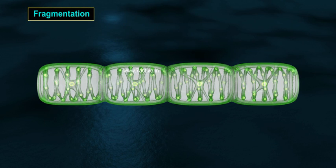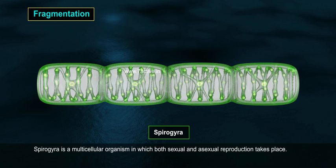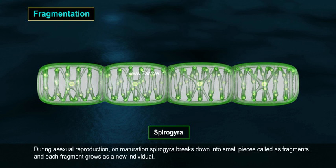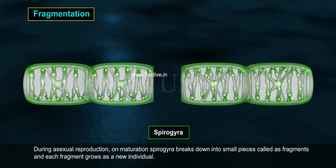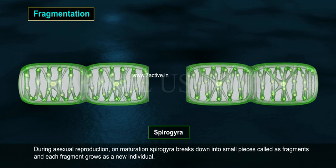Fragmentation. Spirogyra is a multicellular organism in which both sexual and asexual reproduction takes place. During asexual reproduction, on maturation, spirogyra breaks down into small pieces called fragments, and each fragment grows as a new individual.